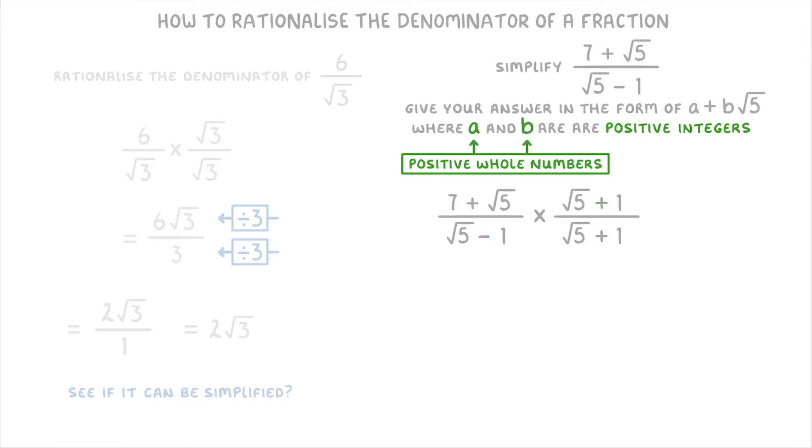Next, you need to actually do the multiplication. So for the numerator, you should get 7 root 5 plus 7 plus 5 plus root 5, which simplifies to 12 plus 8 root 5.